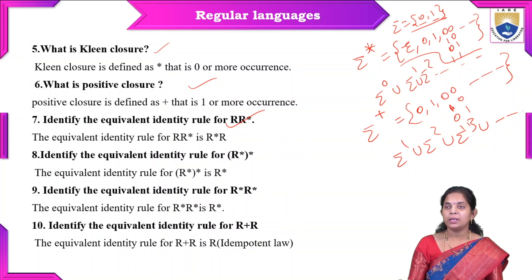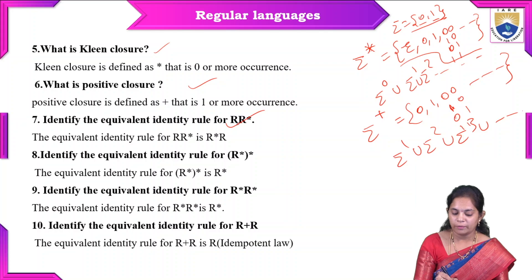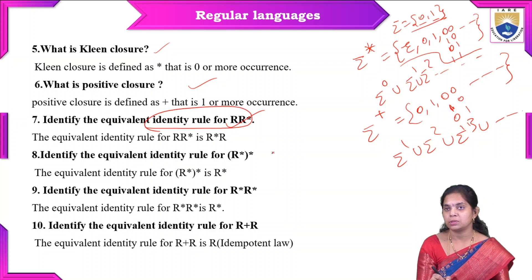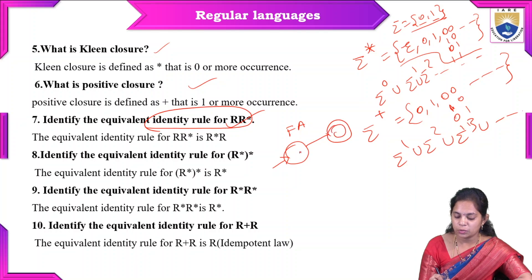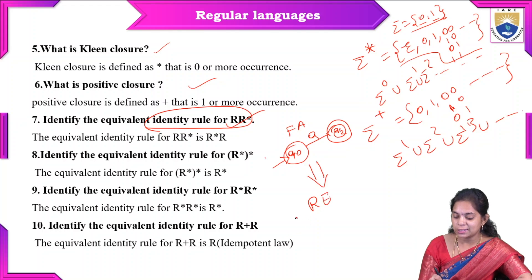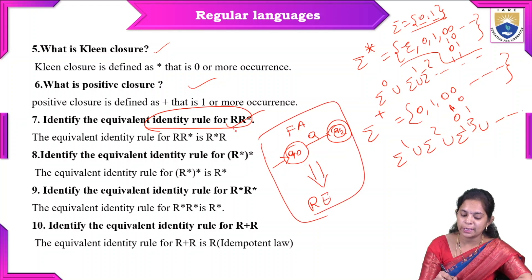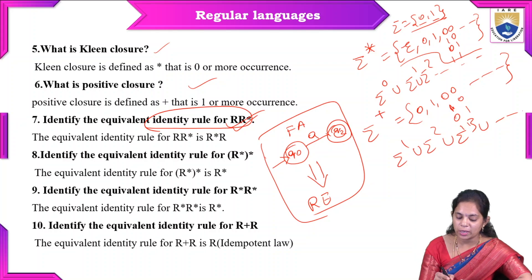Now we discuss the identity rules for regular expressions. When we have finite automata — that is, a transition diagram — and we need to convert it into a regular expression, we require these identity rules. The identity rules are used while converting finite automata into regular expressions.